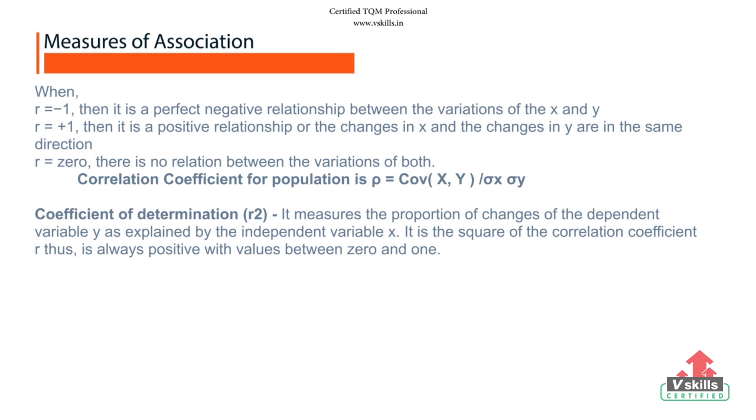The coefficient of determination, denoted by R square, is a key output of regression analysis. It is interpreted as proportion of the variance in the dependent variable that is predictable from the independent variable.